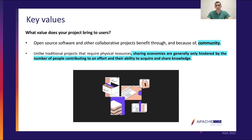Do not forget that open source software and other collaborative projects exist and benefit because of community. Community is the number one factor that makes an open source project not only survive, but also thrive. Unlike traditional projects, open source projects are more similar to sharing economies. Sharing economies are generally only hindered by the number of people actually contributing and putting effort in — by sharing their ability to acquire and share knowledge. As long as people contribute, this economy can thrive. The same thing applies for open source.